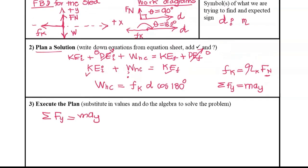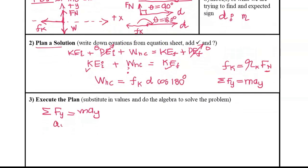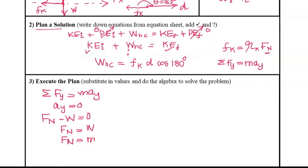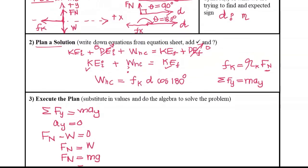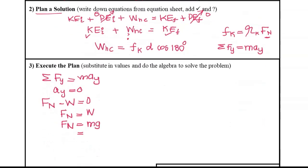Let's execute this plan. Net force in the y-direction equals mass times acceleration in the y-direction. Acceleration in y is zero because the sled only moves horizontally. In the y-direction: normal force is positive, weight is negative, so normal force equals weight. That gives us: N = mass × g = 10 kilograms × 9.8 meters per second squared. Since one newton equals one kilogram·meter per second squared, normal force equals 98 newtons.